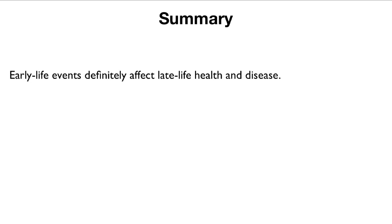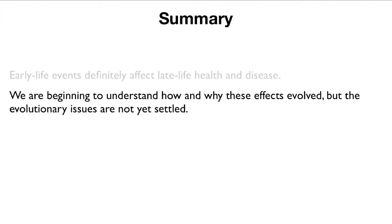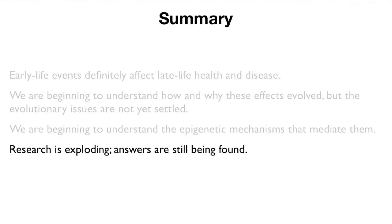To summarize: early life events definitely affect late life health and disease. We're beginning to understand the mechanisms that might be mediating these effects, and we're beginning to see why they might have evolved. But several points remain controversial — we don't see all of the mechanisms yet, and the degree to which the predictive adaptive response really evolved for that reason is not yet clear. Research is exploding, and answers are still being found, but what is certain is that the effects exist and have significant impact on adult health.